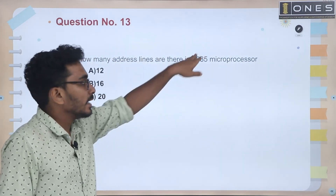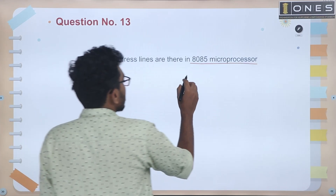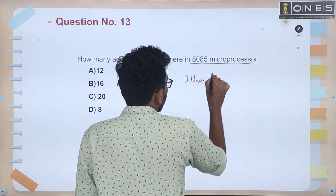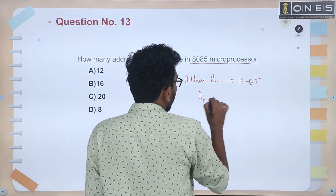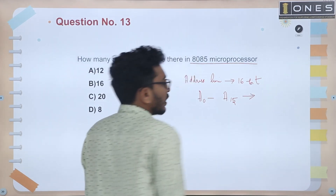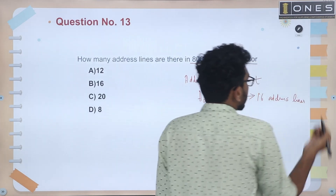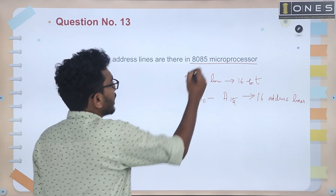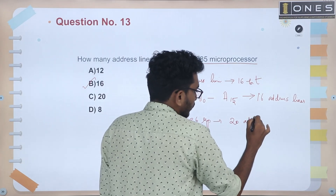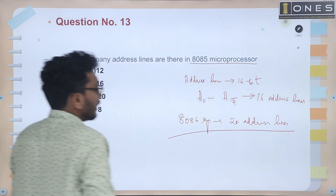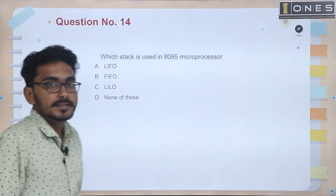Next question: How many address lines are there in the 8085 microprocessor? The 8085 has a 16-bit address line, from A0 to A15, giving 16 address lines. Note: the 8086 microprocessor has 20 address lines.